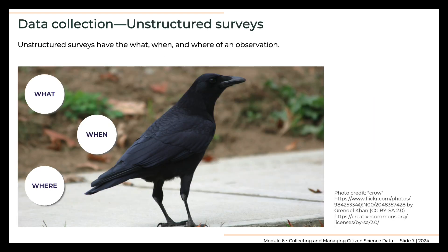Unstructured surveys have few requirements for data collection. Participants report data when and where they choose and are not required to identify everything that they see. For instance, they may note the presence of certain birds or flowers in walks around their neighborhood or along a hiking trail. They might keep track of the kinds and numbers of fish that they catch in a favorite lake or stream, or they may document invasive plants or structural damage along a trail. Unstructured surveys do require observers to note what, when, and where — the basic items of information required for any observation to be useful.